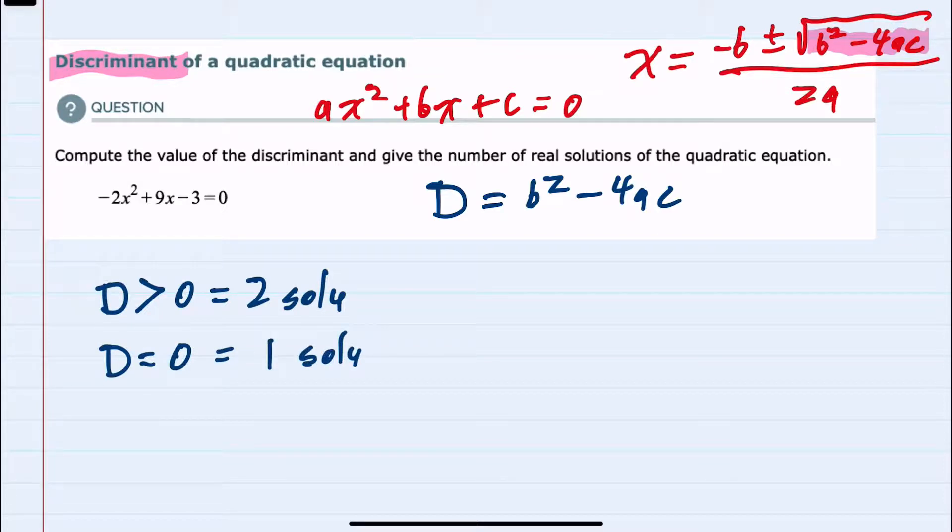And here, both of these solutions are real because we're taking the square root of either a positive number or 0. However, if the discriminant is less than 0, if it's negative, then we would be taking the square root of a negative number. And that would give us complex numbers. So here, we would have two complex solutions.